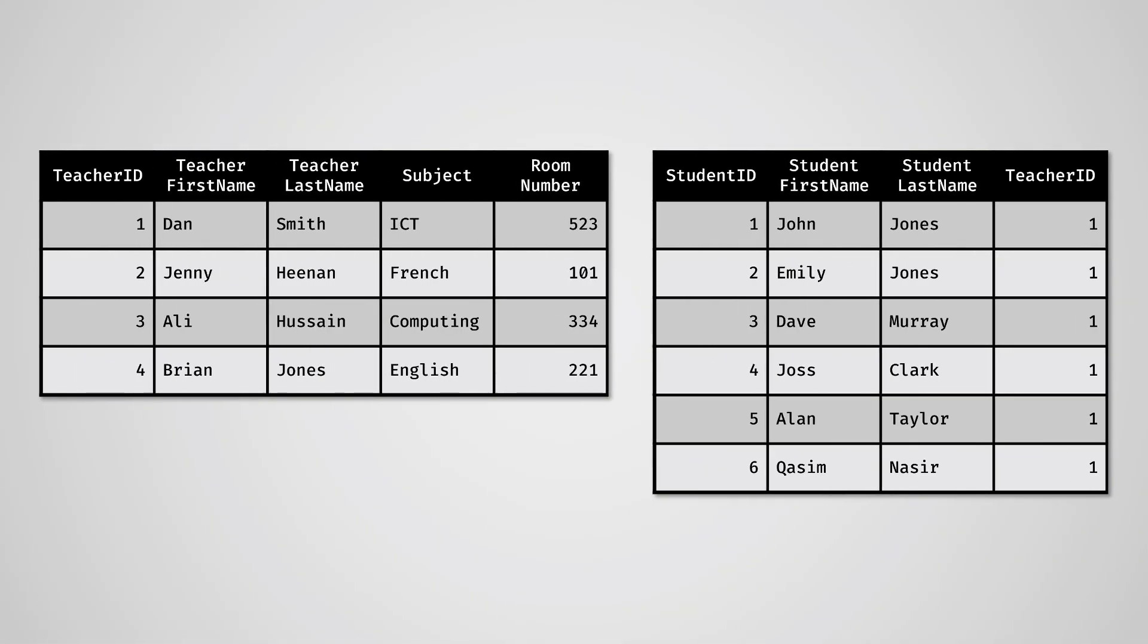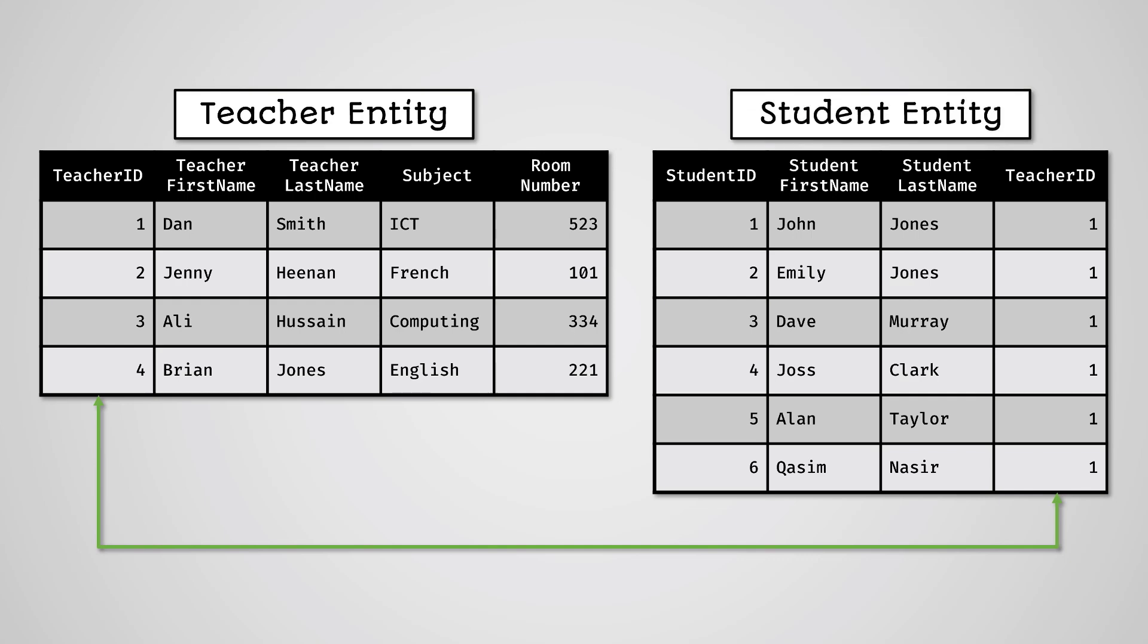We have two tables, also called entities, that have a link or relationship between them. An entity is a single type of object or thing in the database. We store information about that object in a table. In this example, we have a teacher entity and a student entity.